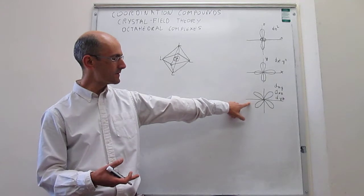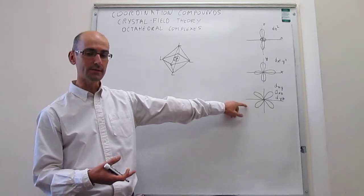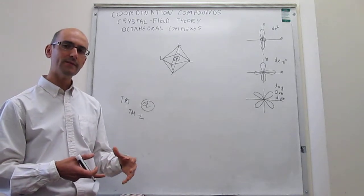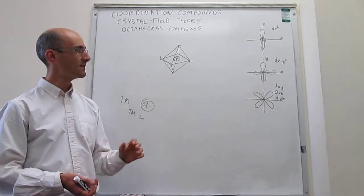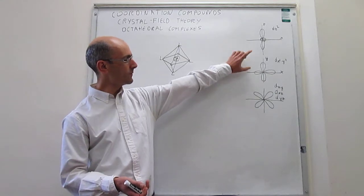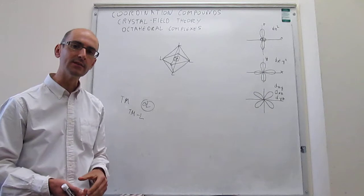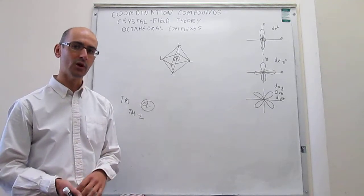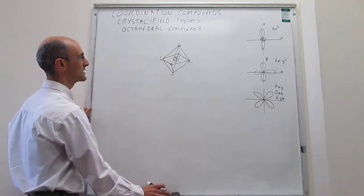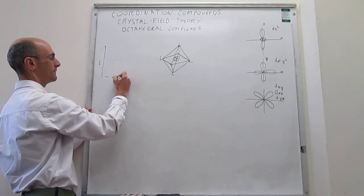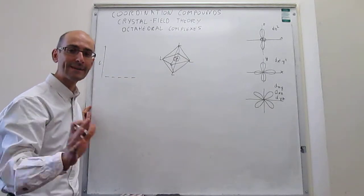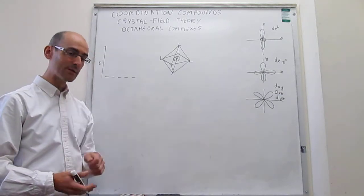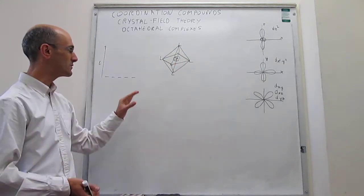However, the set of three orbitals — dxy, dxz, and dyz — are not pointing directly toward any of the ligands, so they will experience less electronic repulsion and will be a little bit more stable. Because the repulsions experienced by these two sets of orbitals are different, once you have ligands near the transition metal, the energies of those five d orbitals are no longer the same — those orbitals will not be degenerate. In the energy diagram, all orbitals experience repulsion from the ligand lone pairs and go up in energy, but differentially.